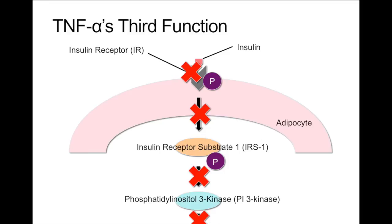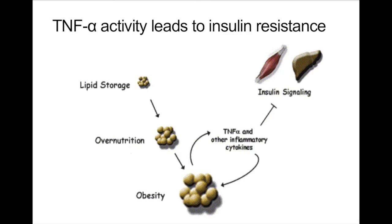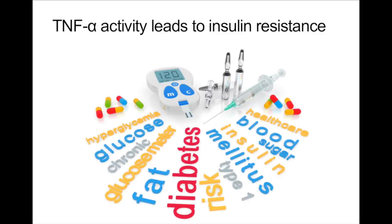Because insulin is unable to promote the intake of glucose, there is a buildup of glucose in the bloodstream. This can lead to serious health complications including diabetes. Developing a deeper understanding of TNF-alpha's mechanistic role in developing insulin resistance is an area of research that continues to spark interest, as the average modern diet continues to become even richer in carbohydrates and fats to compensate for the world's ever-growing population. Further research continues as a fight to combat obesity and diabetes.